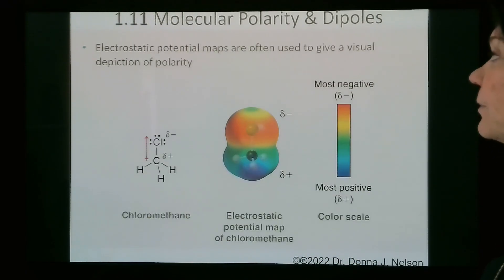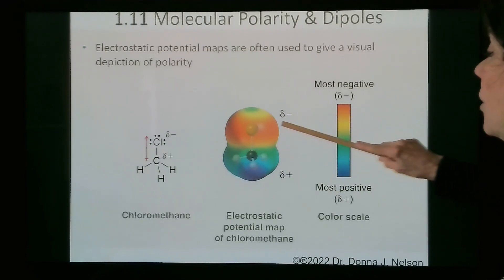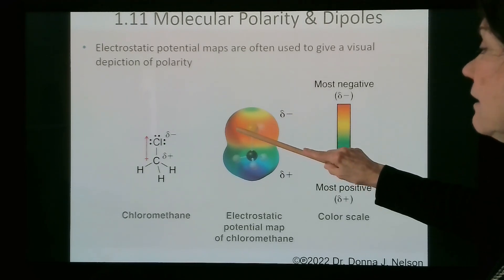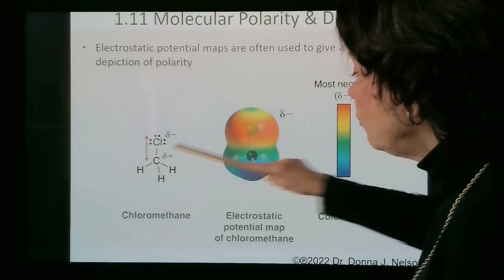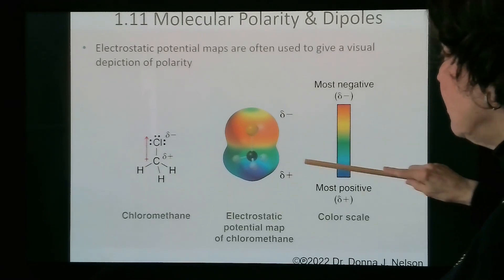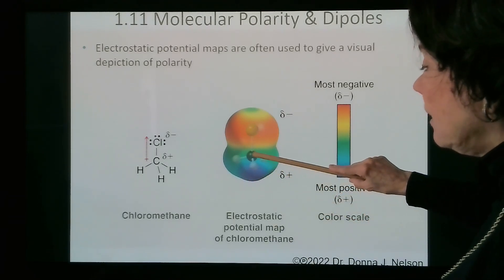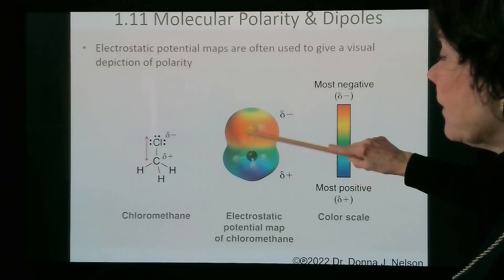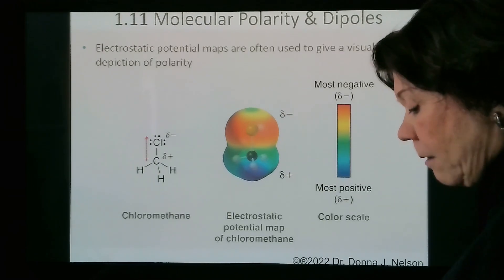This is an electrostatic potential map — we'll use these throughout the course and into organic chemistry 2. The more red color depicts higher electronegativity or higher negative charge. Chlorine is shown here, and the molecule is drawn inside the electrostatic potential map. The legend shows more negative to more positive, indicating that electron density is being pulled off of carbon onto chlorine: this end of the molecule is partially negative, and this end is partially positive.